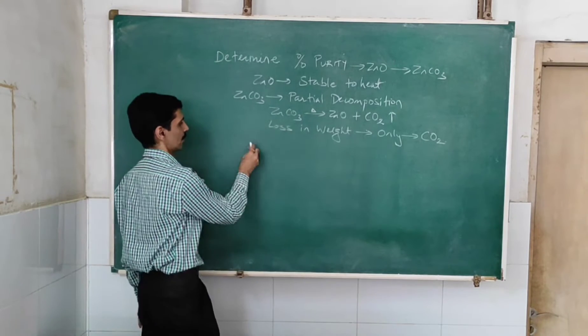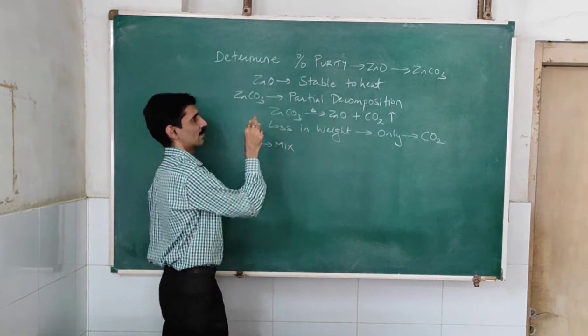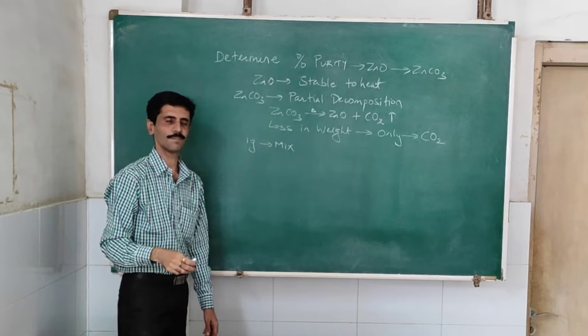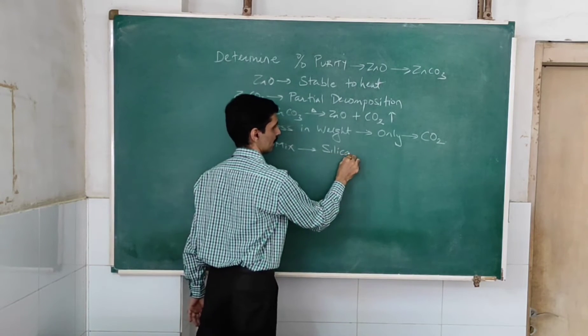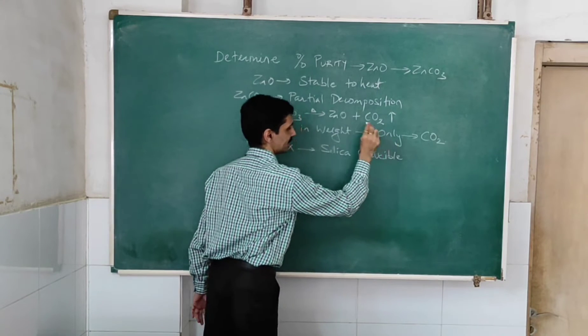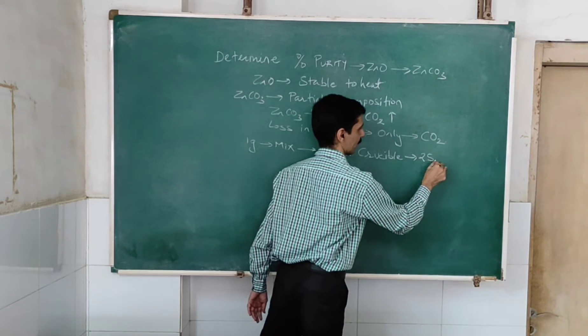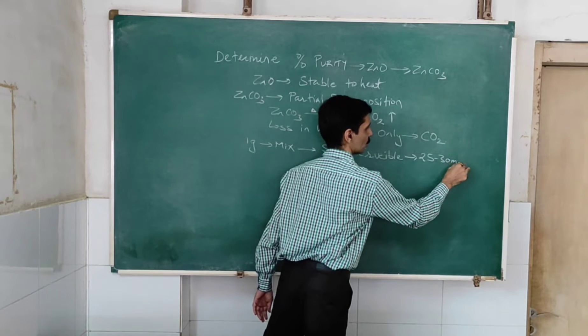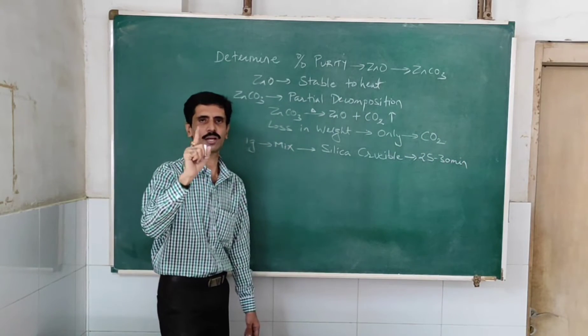What we are going to do is we are going to take one gram of the mixture containing zinc oxide and zinc carbonate and we are going to heat it in a silica crucible. The heating needs to be carried out for around 25 to 30 minutes to ensure the removal of entire amount of carbon dioxide.